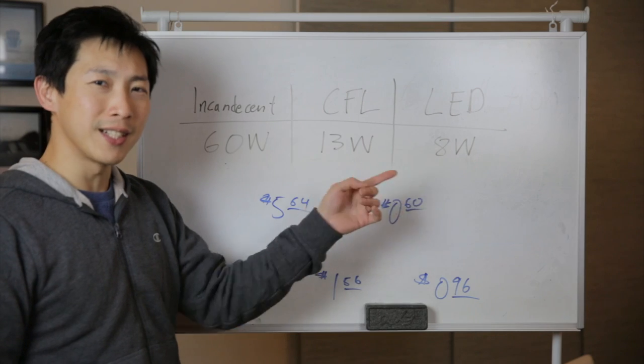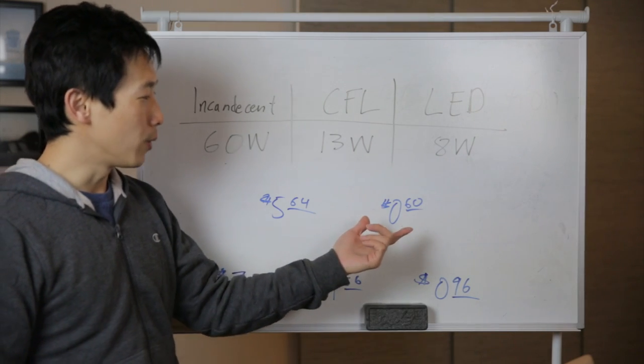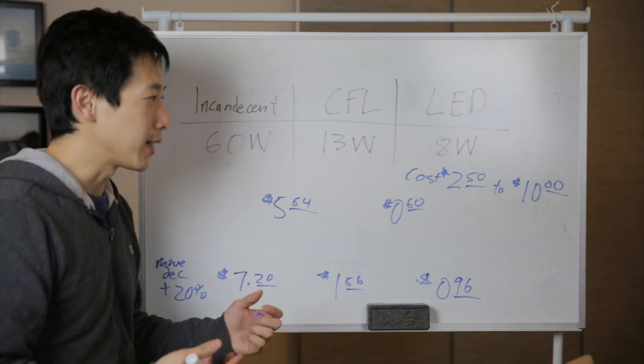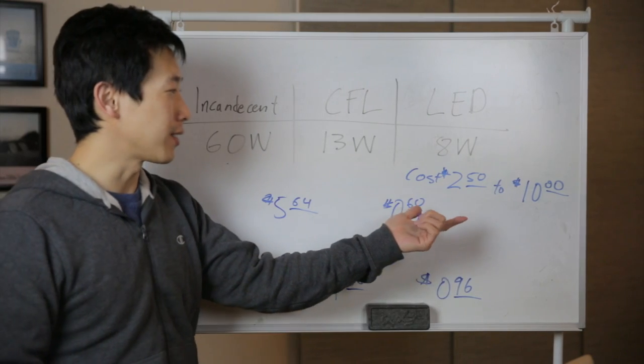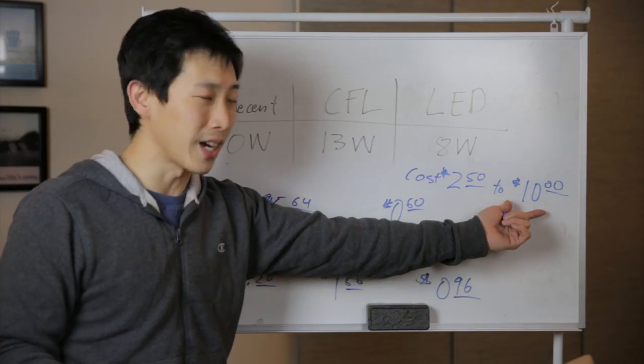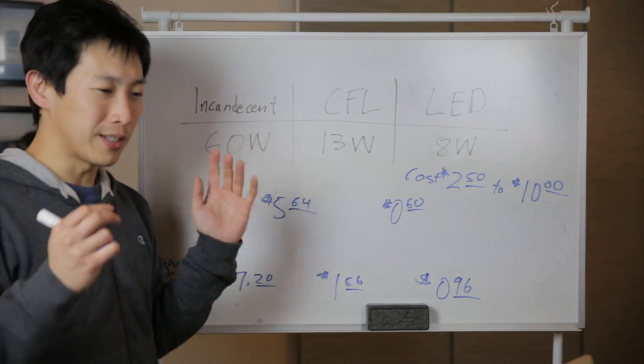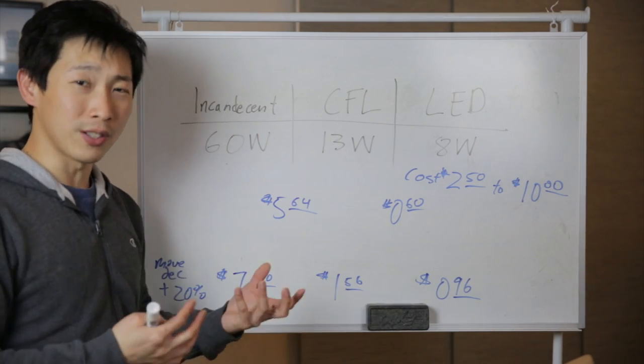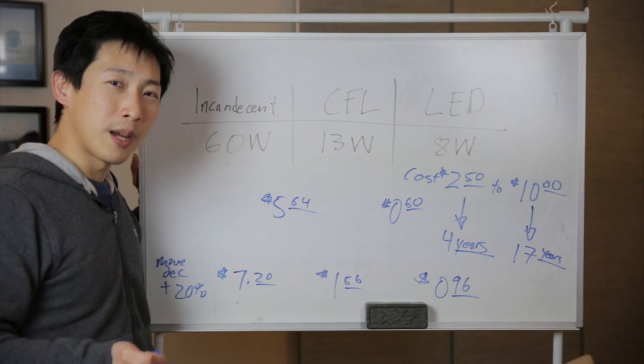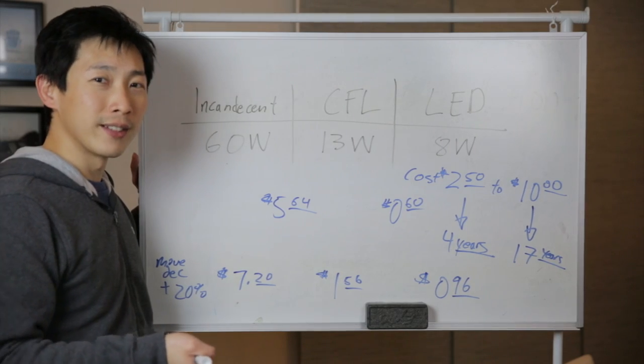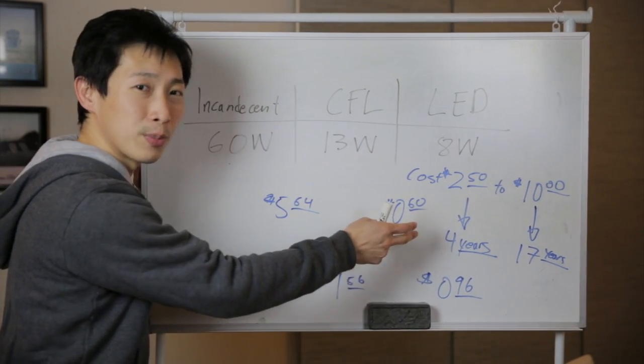Now moving from CFL to LED is a little bit more difficult, because you only save 60 cents per year. A typical LED light bulb might cost anywhere from $2.50 to $10. Now if you try to replace every single light bulb, maybe the fancy looking ones, it'll cost quite a bit.